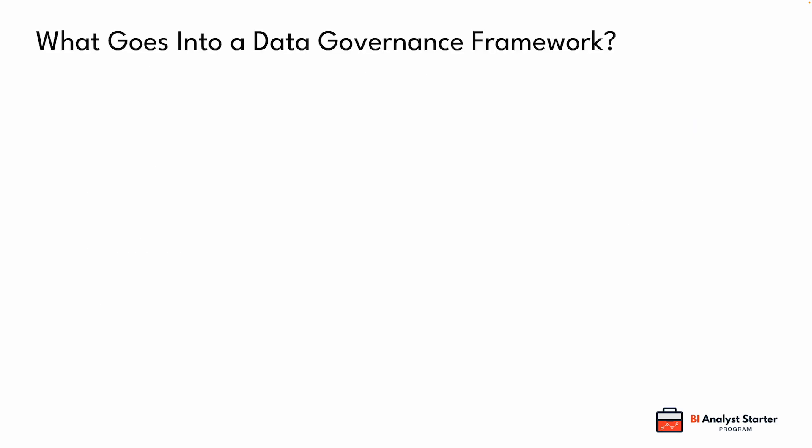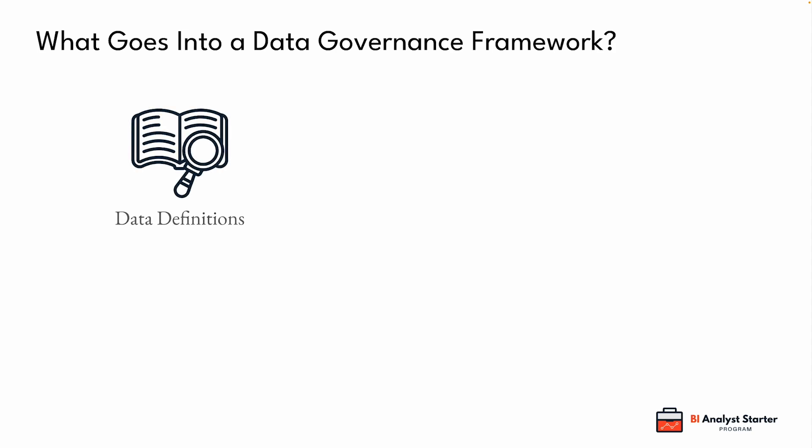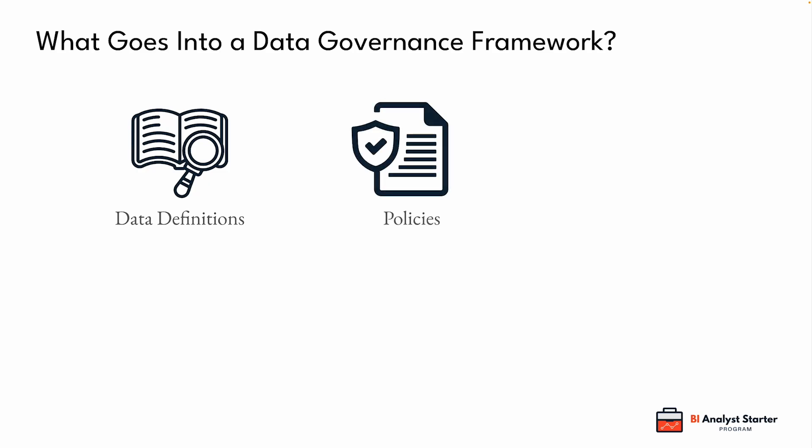There are a few core building blocks you'll see in most governance frameworks. First is data definitions — you need to agree on what common terms mean: a customer, a conversion, a return. These all need to be clearly defined and documented. Next are policies, which set the rules around how data should be stored, accessed, shared, and archived. Some of this is legal, like how long you retain personal data. Other parts are operational, like who's allowed to edit or delete records.